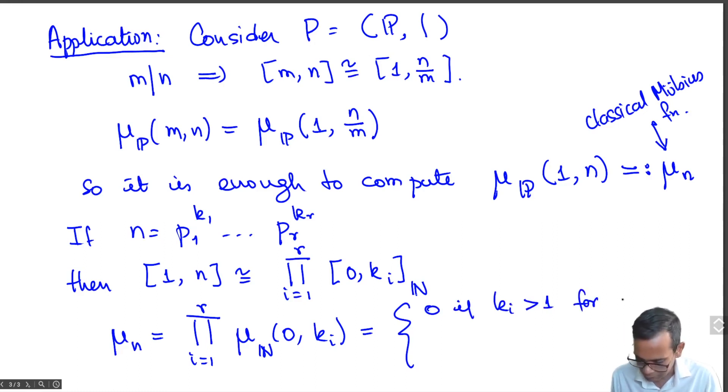So this thing is 0 if k_i > 1 for any i, because then one of these factors will become 0. It is (-1)^r otherwise. That means all the k_i's are equal to 1. The integer n is square-free—not divisible by the square of any prime—and it has r prime factors. In that case, each of these Möbius functions will be μ_N(0,1), which is -1, so we get (-1)^r otherwise. This is the computation of the classical Möbius function in number theory.